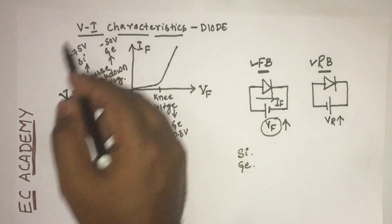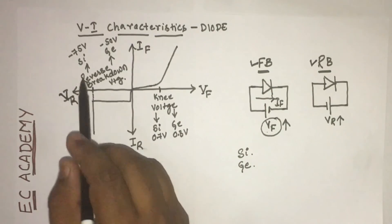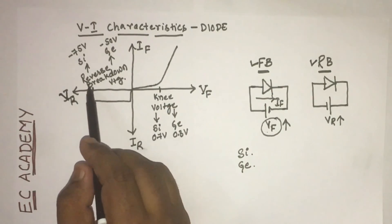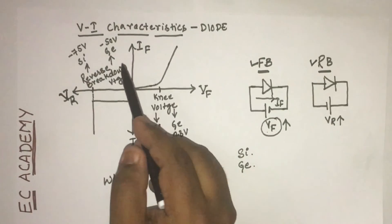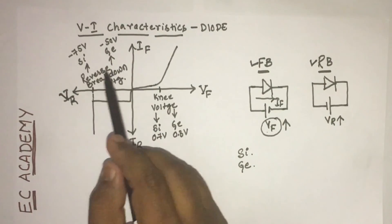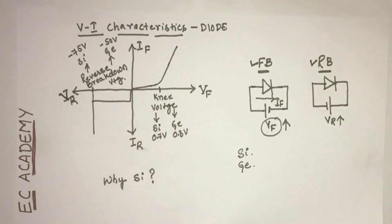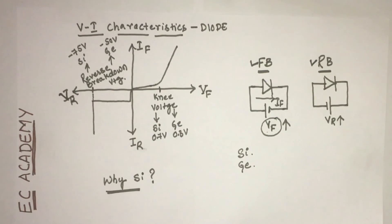As we can see from the graph, we can identify that the reverse breakdown voltage of silicon diode is more compared to the reverse breakdown voltage of the germanium diode. That's why the silicon diode is preferred over the germanium diode. Thank you.